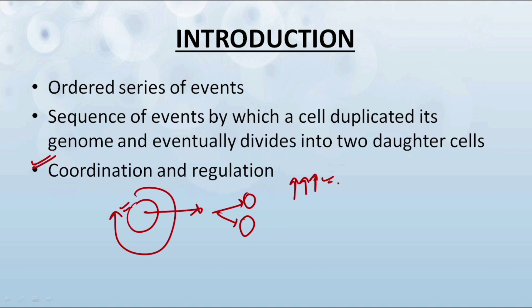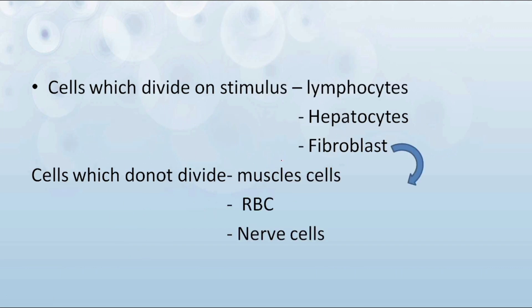There occurs coordination and regulation in the cell cycle, because division of the cell is a very crucial mechanism in the body. Hence, coordination and also regulation are required. Now, there are some cells that divide on stimulus. In our body, we have some cells which divide throughout our life and some others that do not.